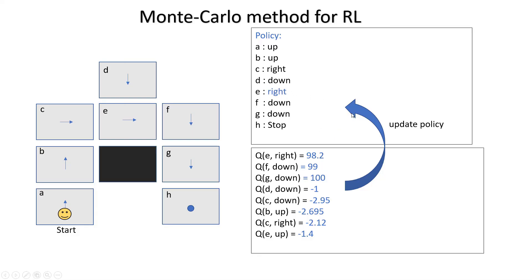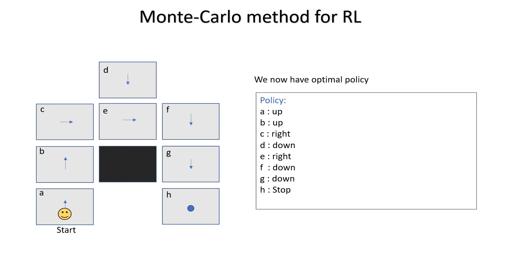So we update E's policy to go right. Now we are done. We have the optimal policy. If you try multiple times, starting from different state-action pairs, this policy shouldn't change much — but this is indeed the optimal policy. You can see it is obviously optimal. Now we can test the agent: it moves directly to the goal, and this is the minimum number of steps it can take.